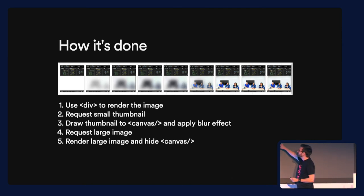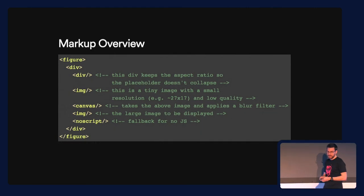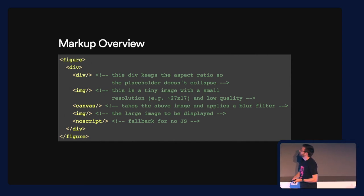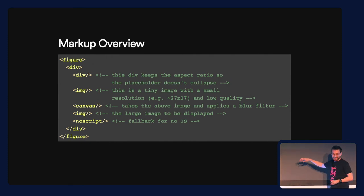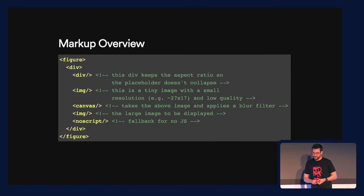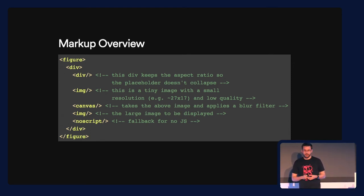There are several things you can do if you're implementing something like that. You can apply a blur effect to canvas, but you can also use SVG filters or CSS3. The markup is not really straightforward — the interesting thing is that the image used is really small, like 27 by 17 pixels, and there's a no-script fallback in case the browser doesn't handle JavaScript. These techniques aim to improve user performance, but they can also backfire.